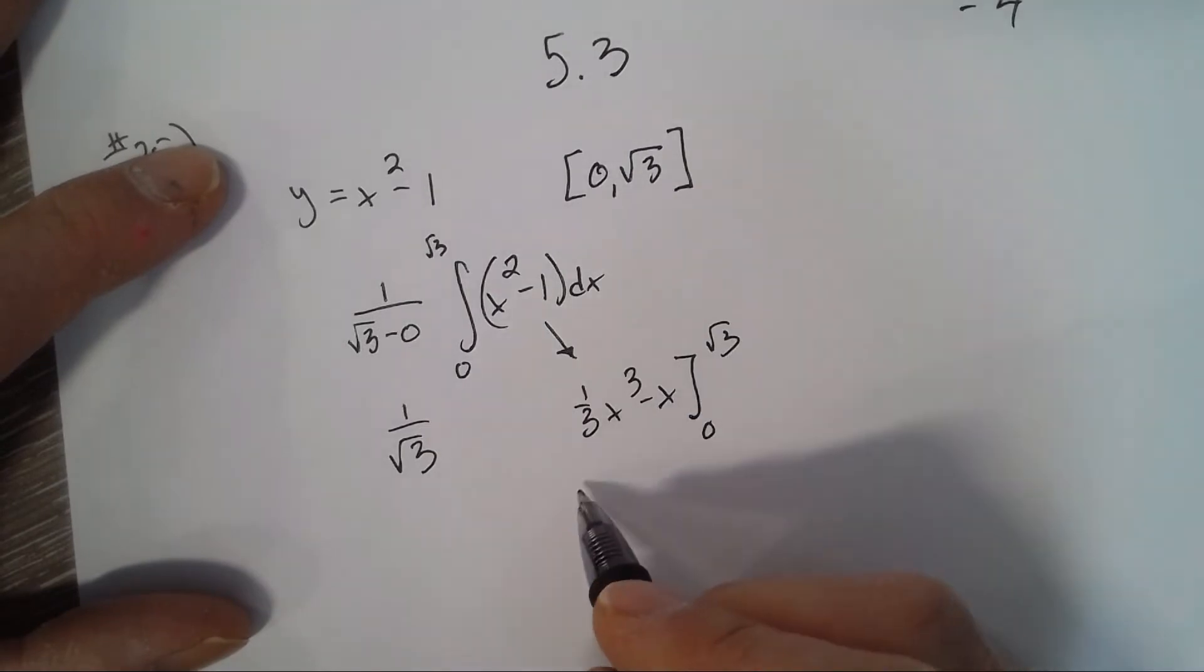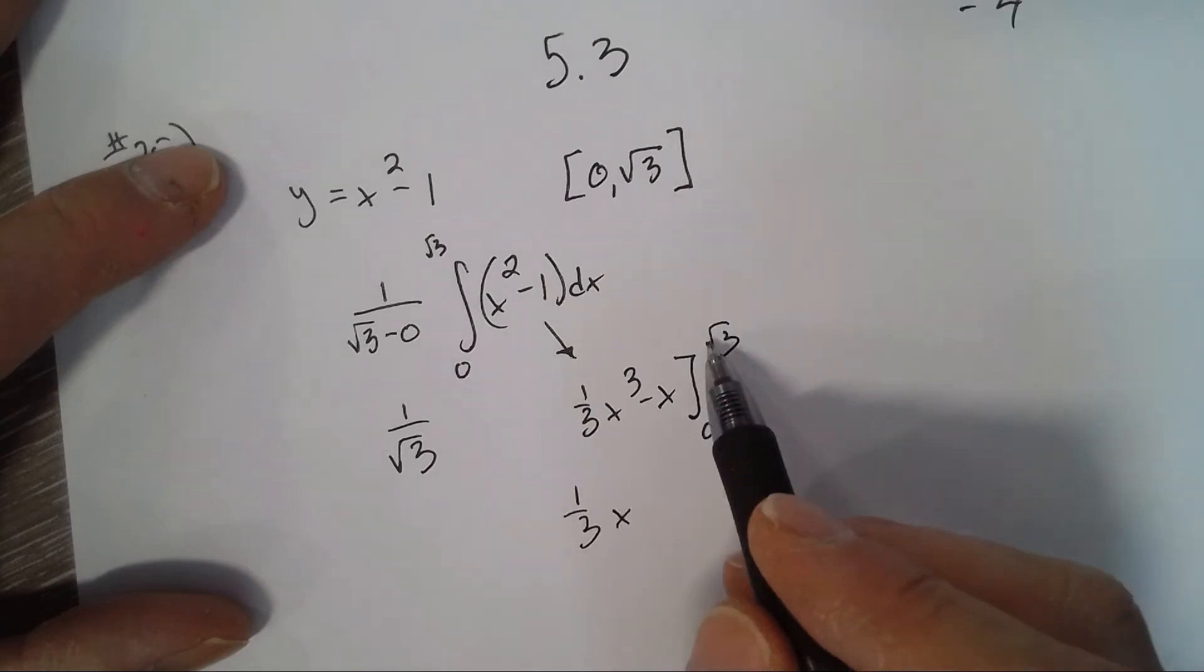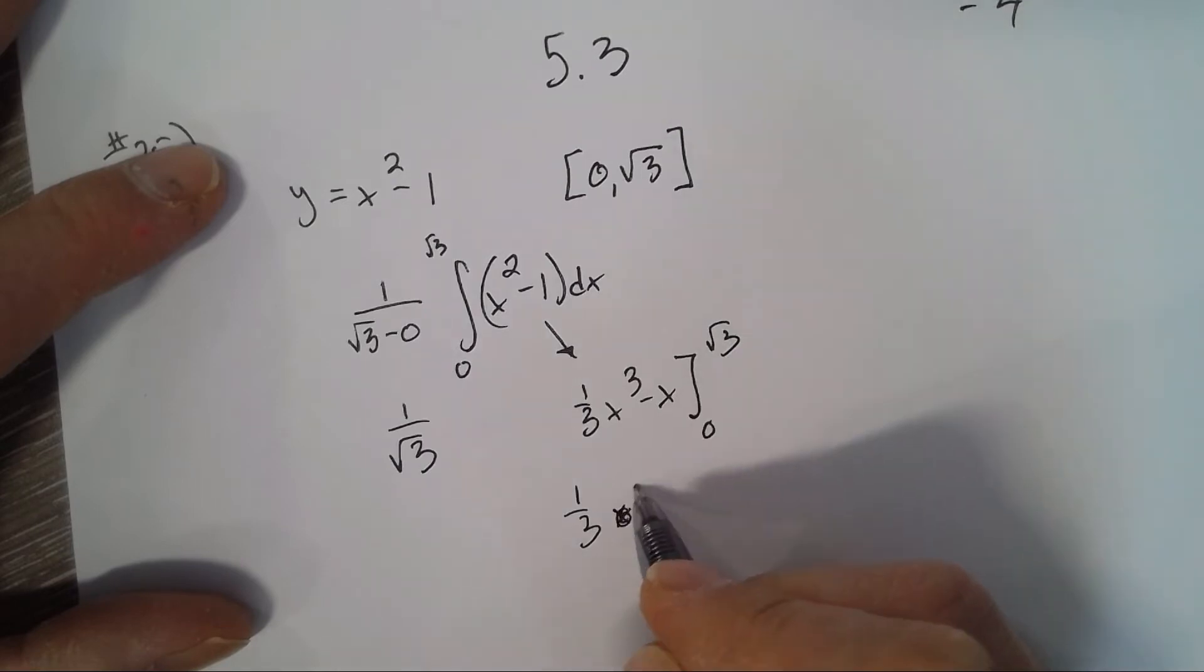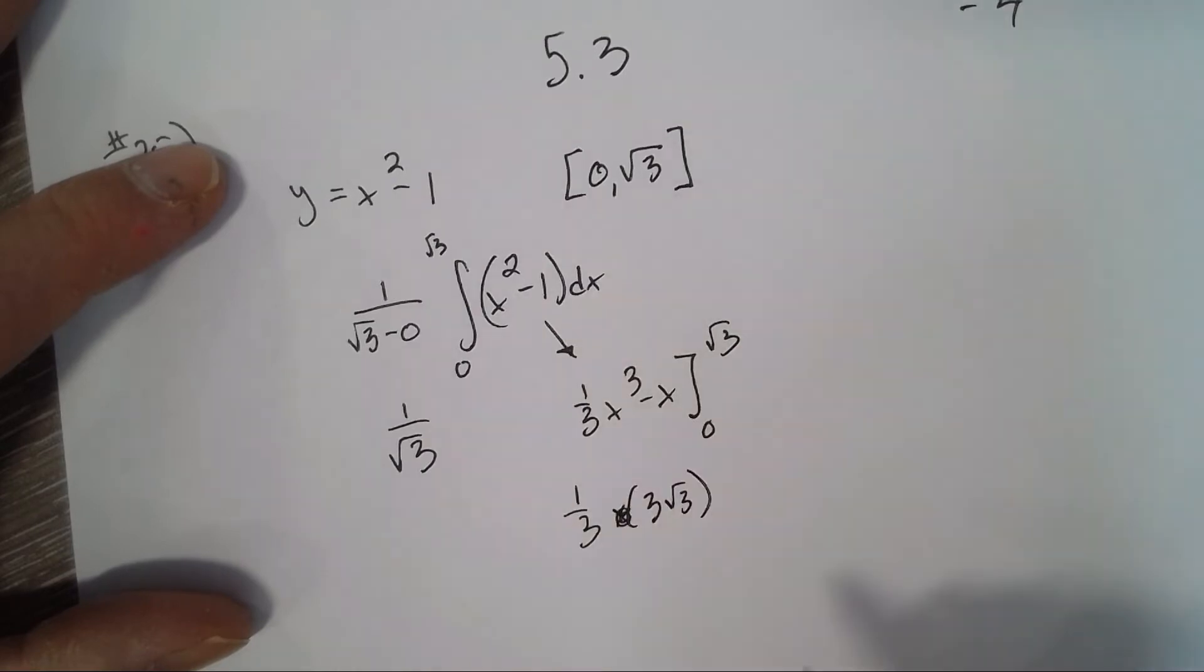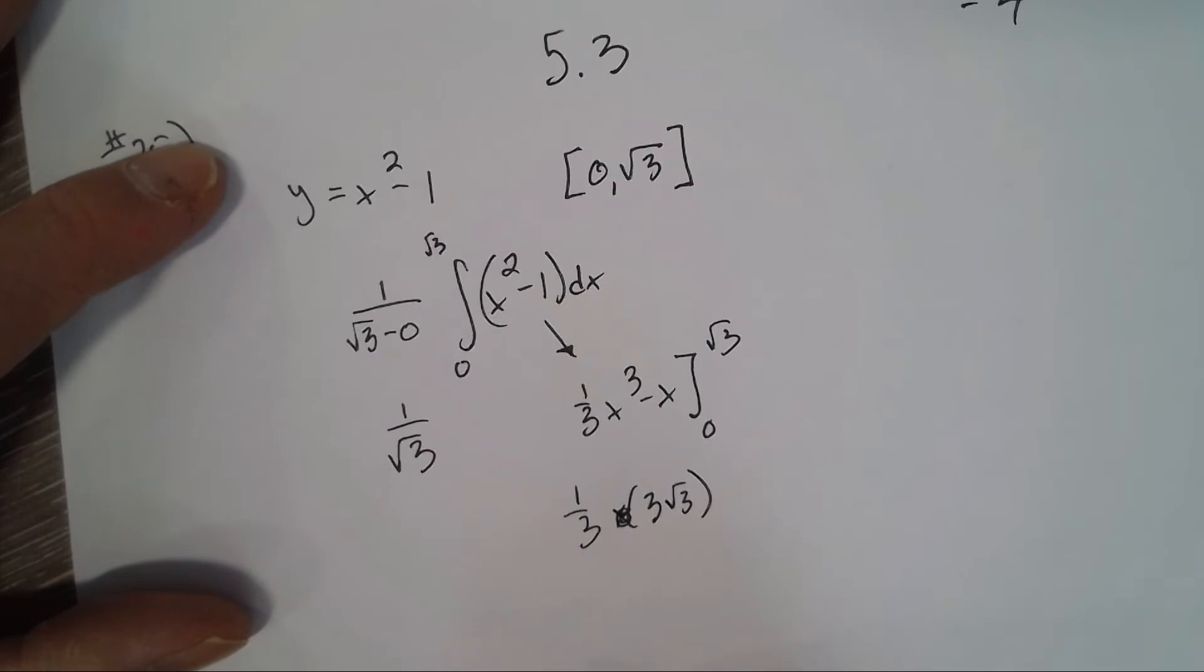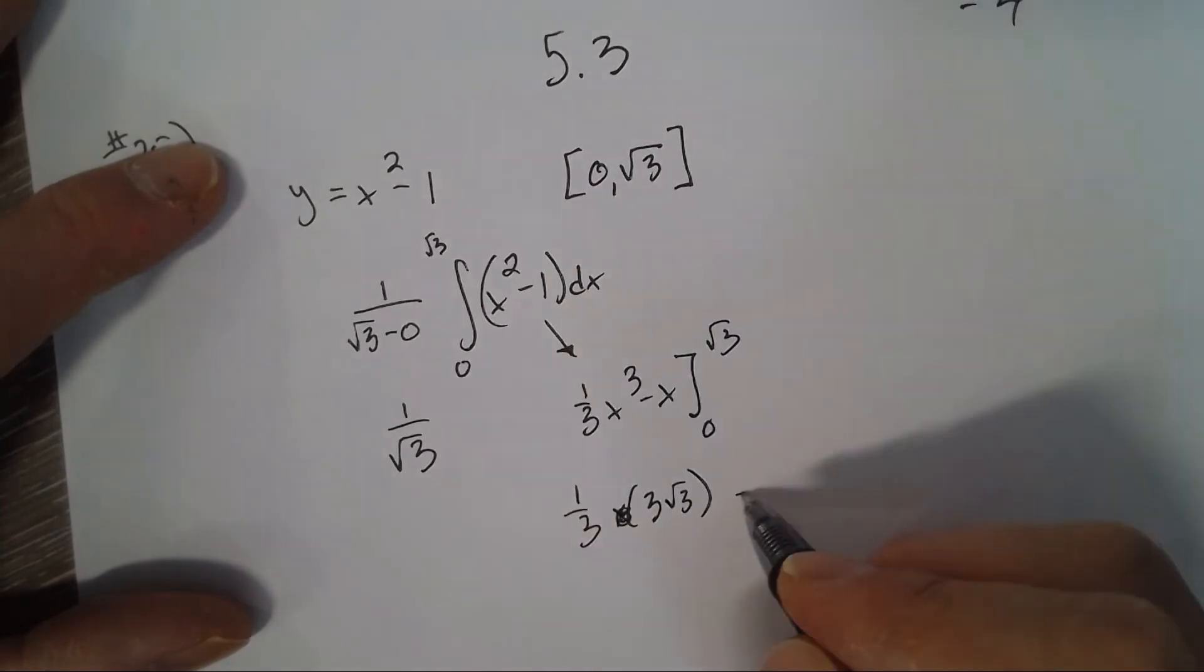So square root of 3 times square root of 3 is 3, times the square root of 3 is 3 square root of 3, minus square root of 3.